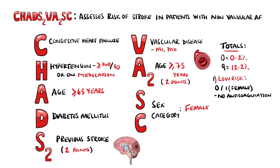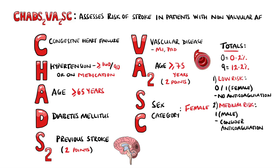A score of 1 for a male is considered a medium risk, and in this instance an anticoagulant should be considered, balanced with the risk of bleeding.